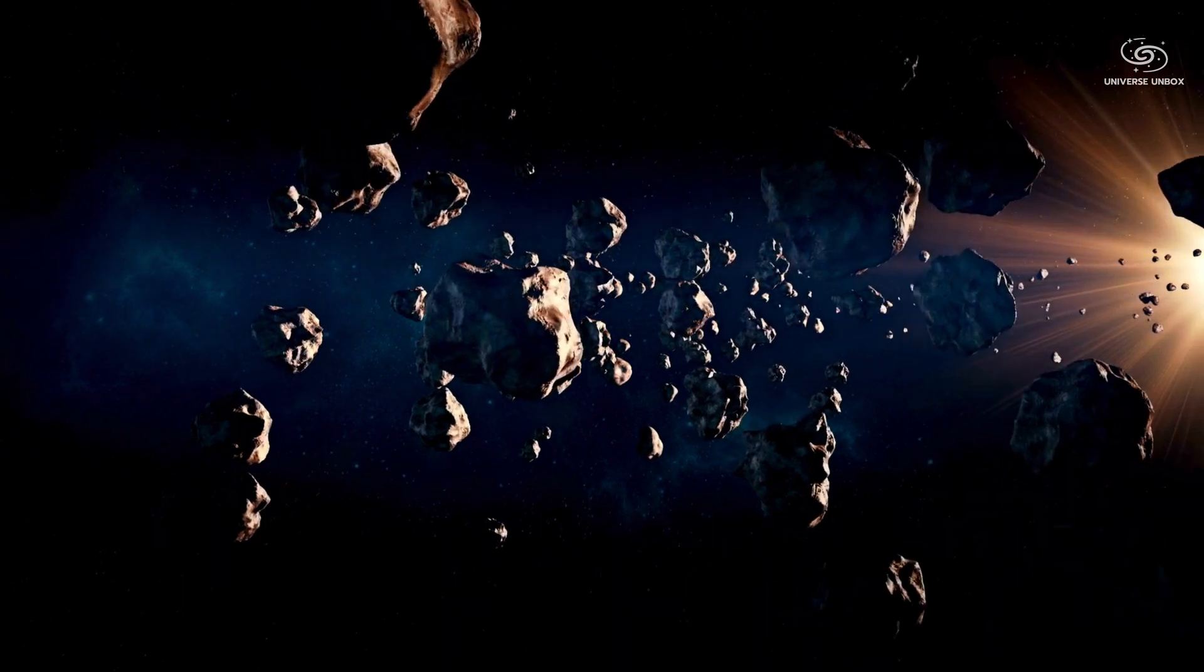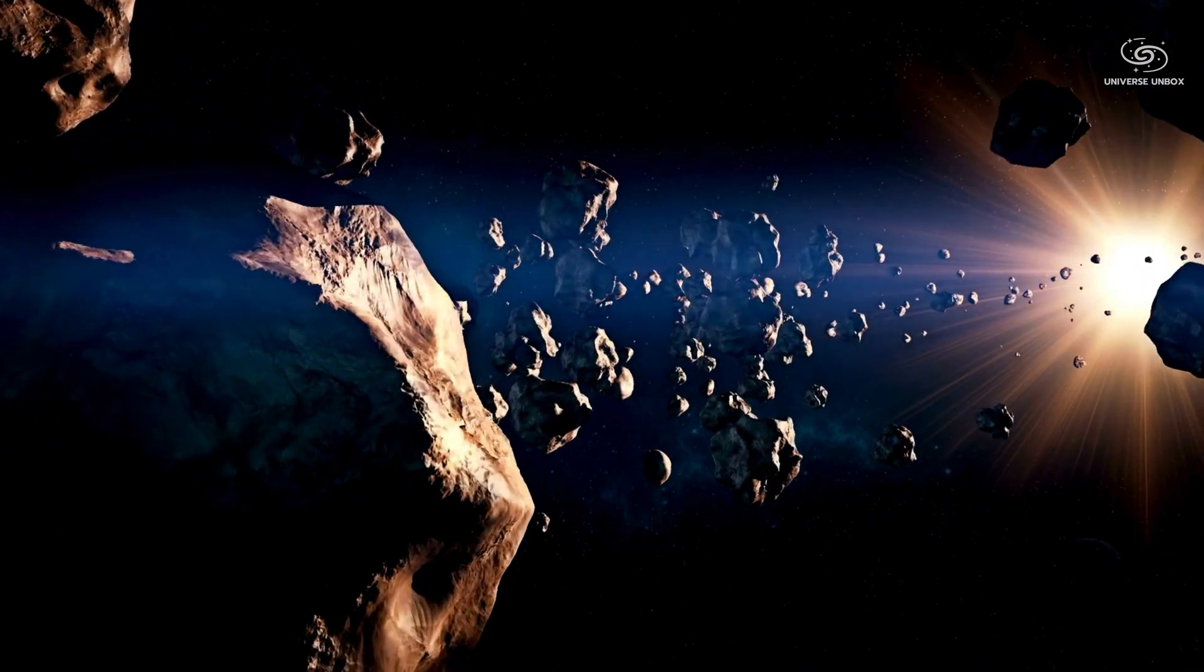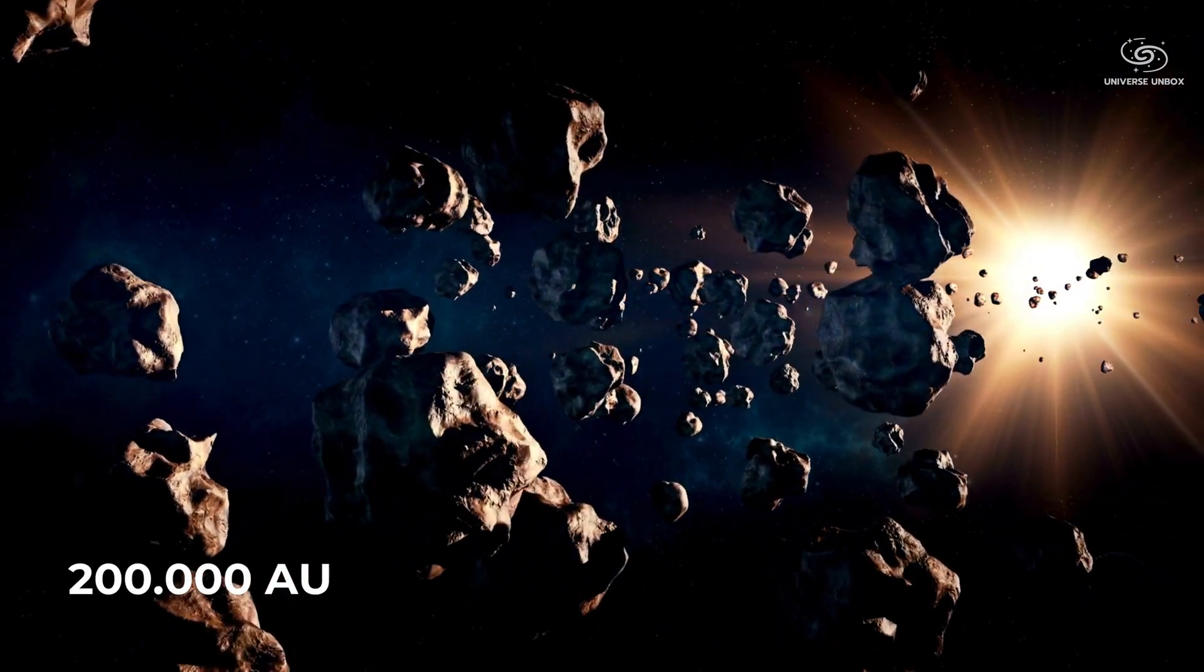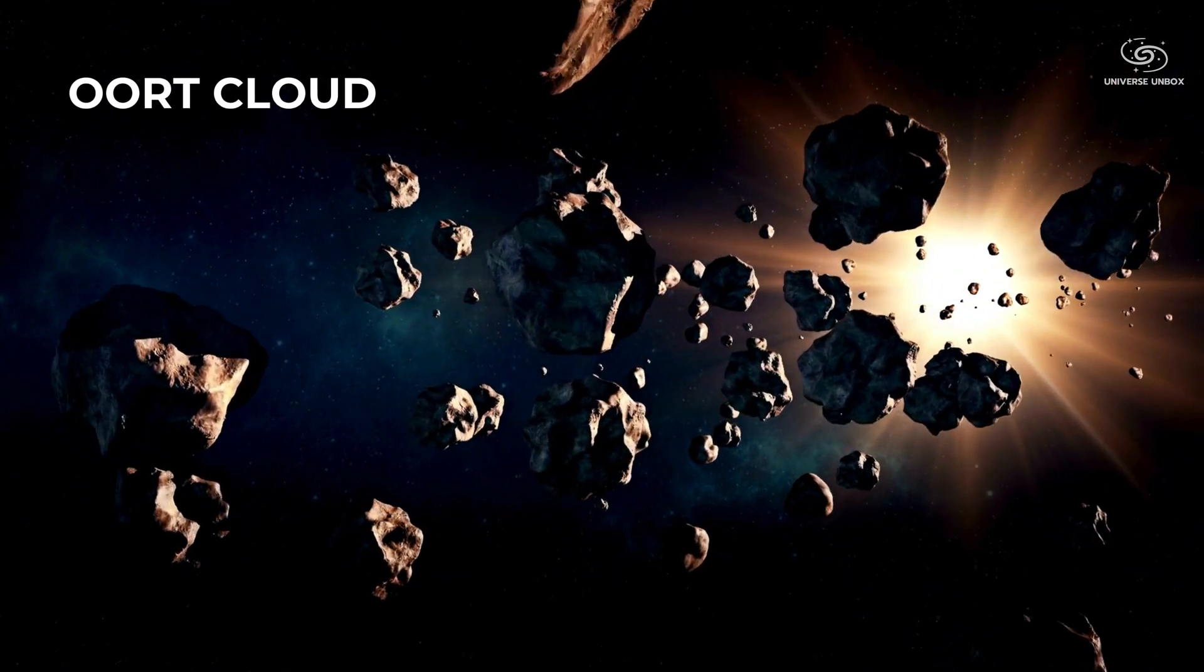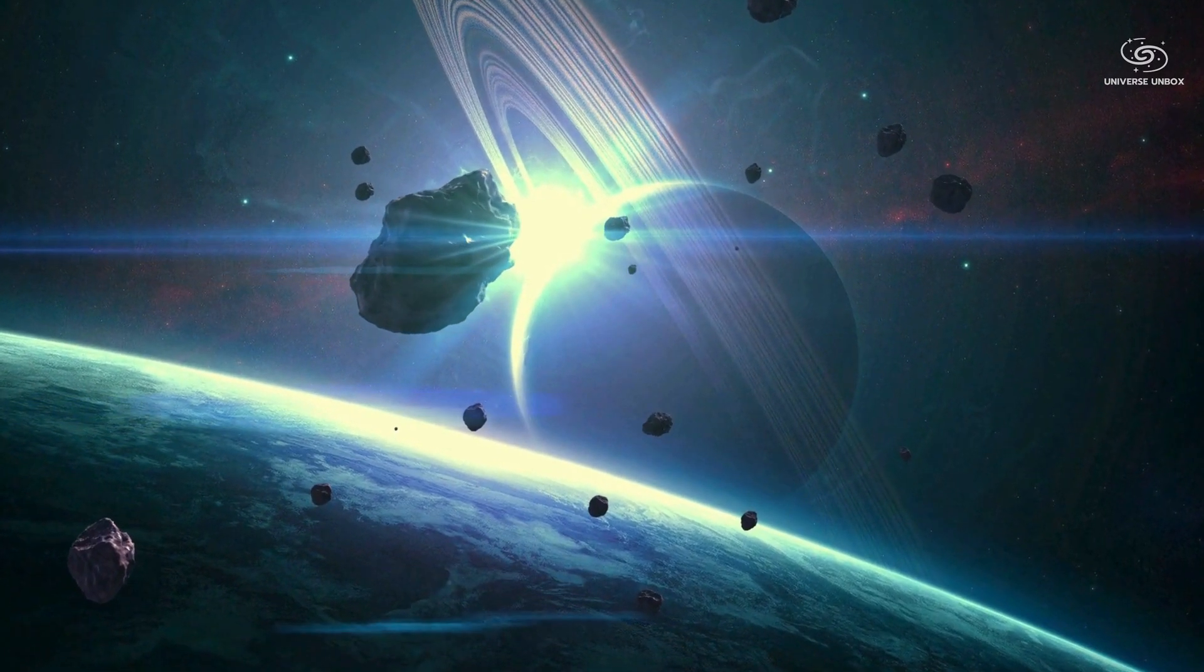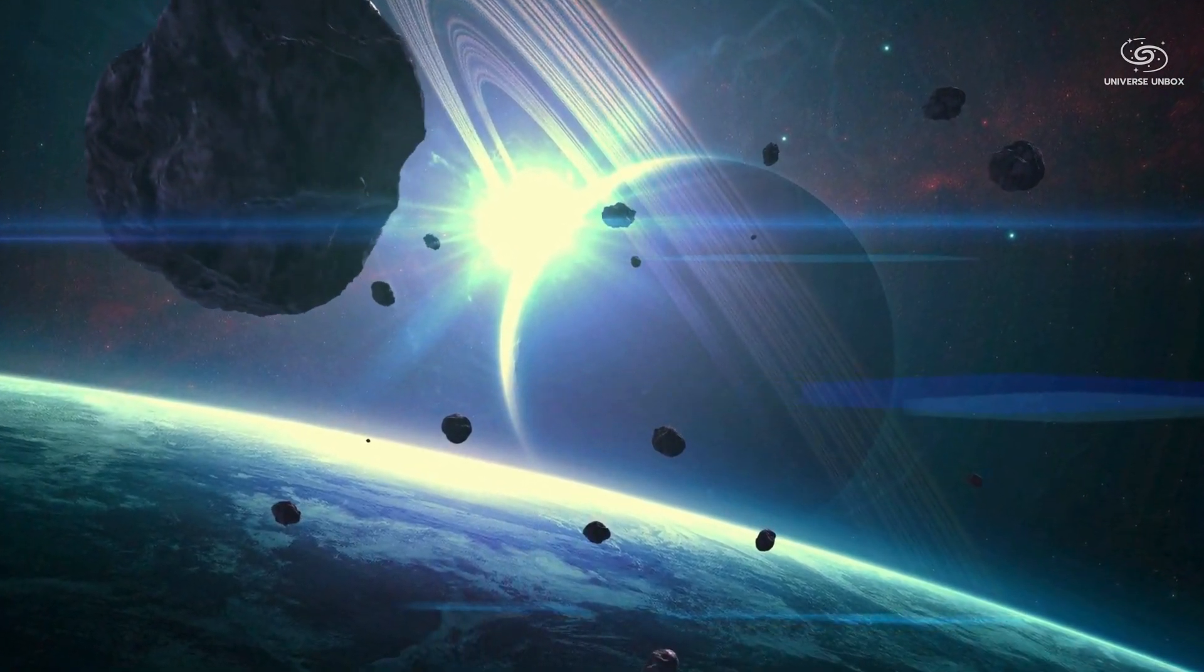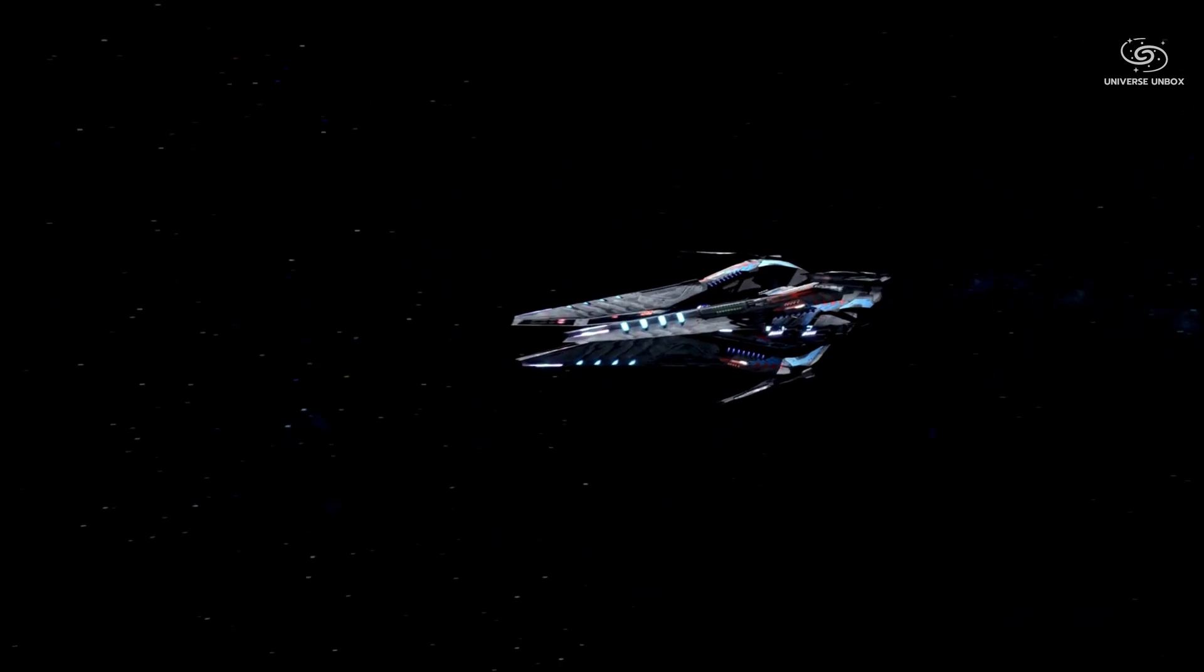We are now traveling in interstellar space and will soon reach a rock wall around the solar system. Another 200,000 astronomical units, and there it is. This rock wall is the Oort Cloud. In reality, it's a collection of small objects orbiting our world. Scientists speculate that the Oort Cloud might be the source of comets and asteroids that fall to Earth. But they are so sparse that we can fly through them. Now, we are in complete darkness.